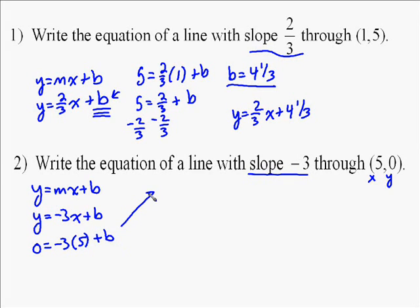so you have 0 equals negative 3 times 5 plus b, while negative 3 times 5 is negative 15. So 0 equals negative 15 plus b. Add 15 to both sides, and you end up with b equals 15.